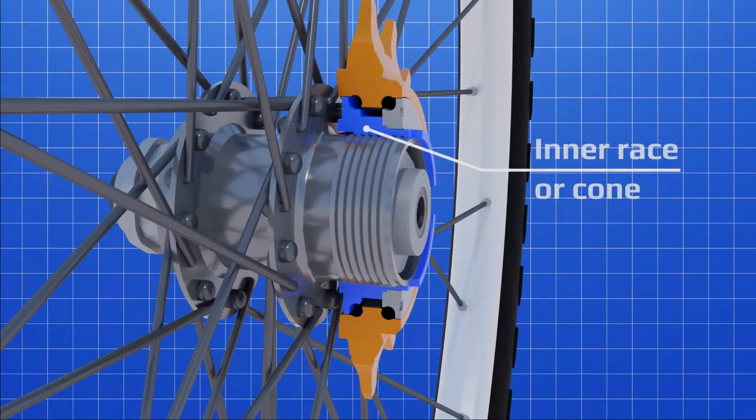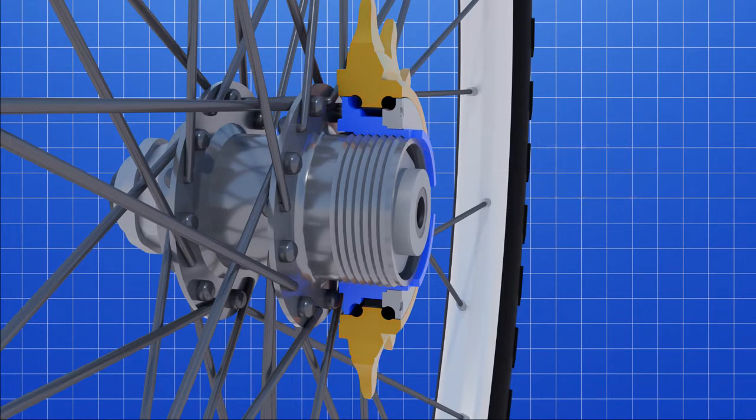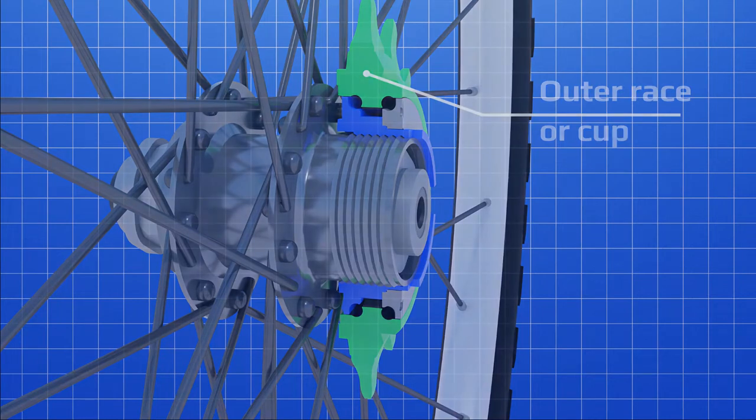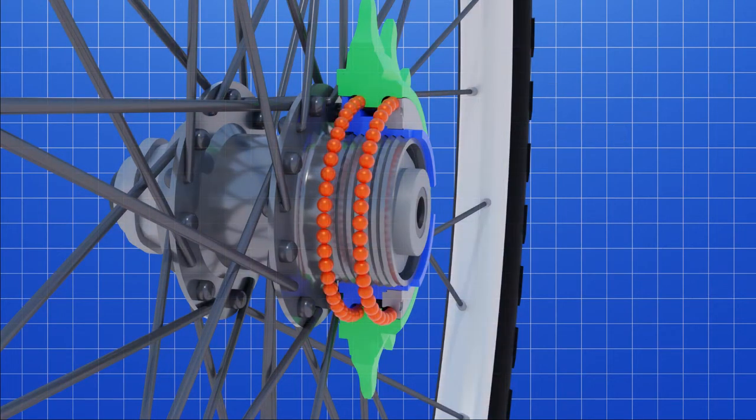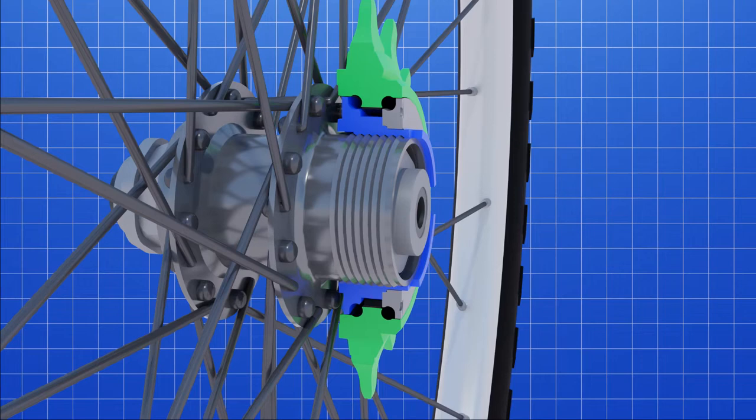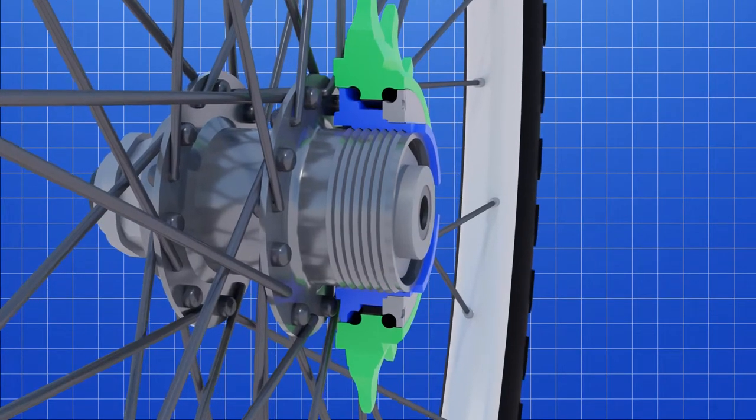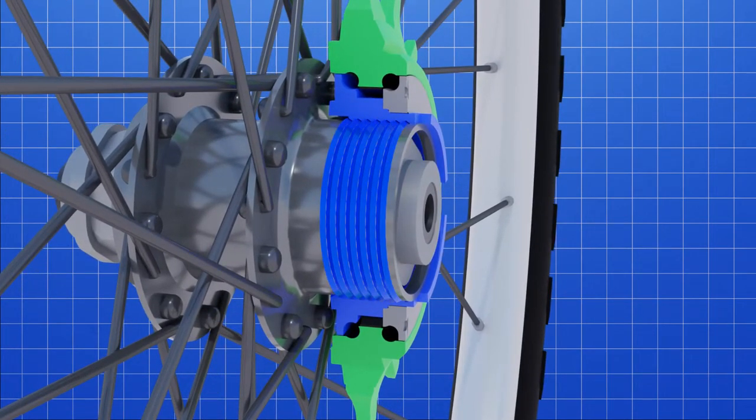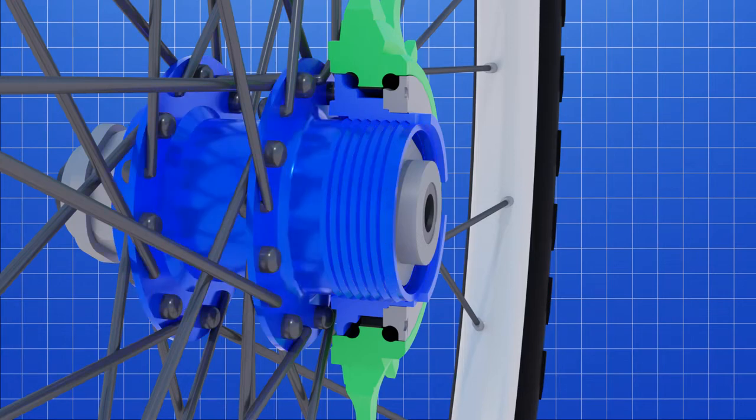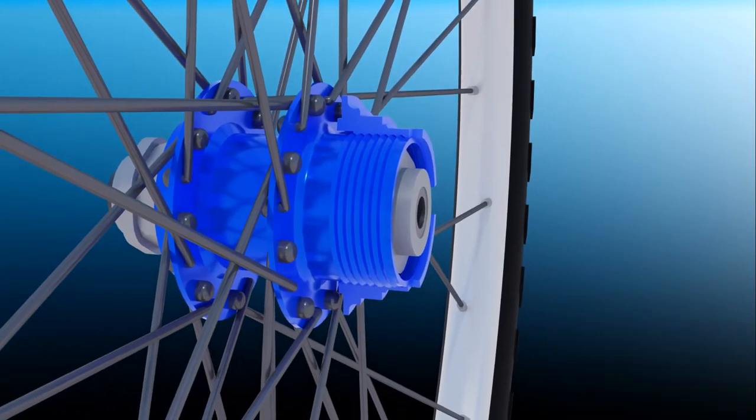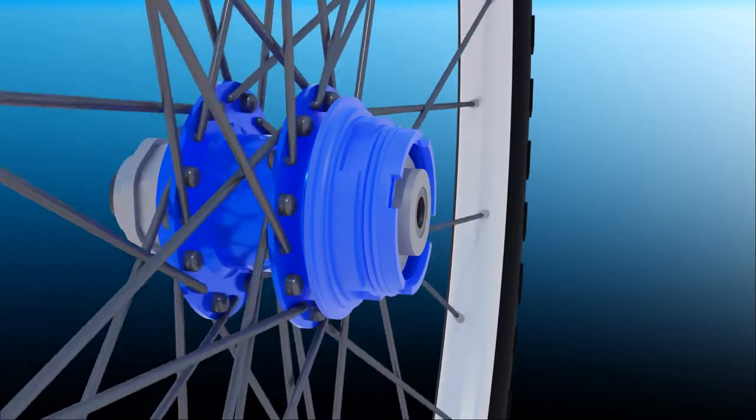The sprocket has one inner race or sometimes called cone, and one outer race, known as cup. Ball bearing set maintains low friction between these two parts. The inner race of the wheel sprocket stays fixed with the wheel hub. So, it always rotates as a single unit.